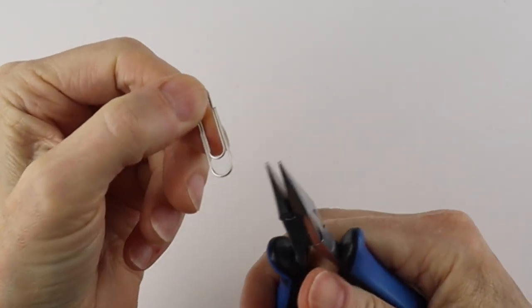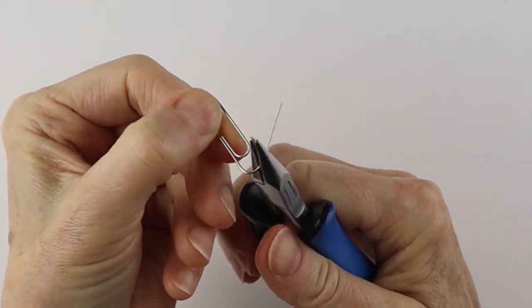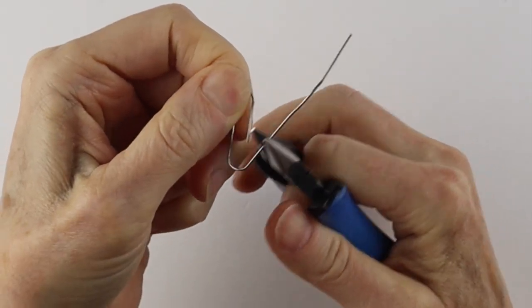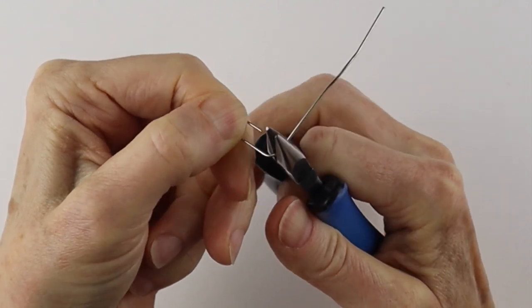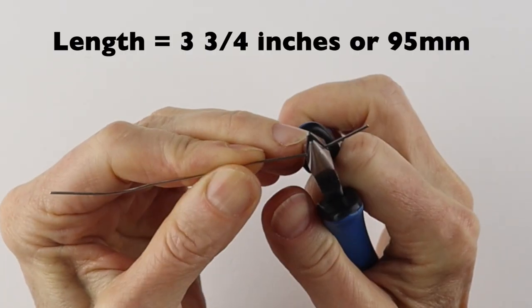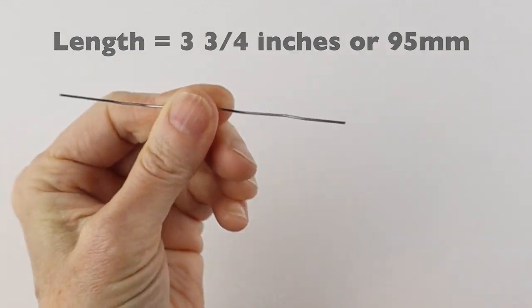We always start with opening up the paperclip with our flat pliers. You can do this by hand, but it's easier to do with the pliers. So just go slowly and pinch it along as you go. You just want to get it as straight as you can.